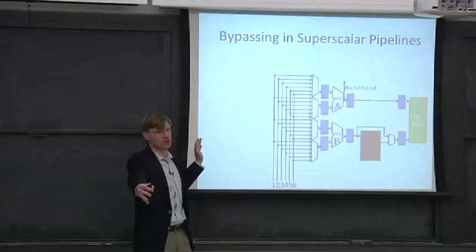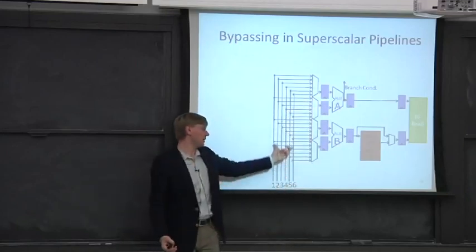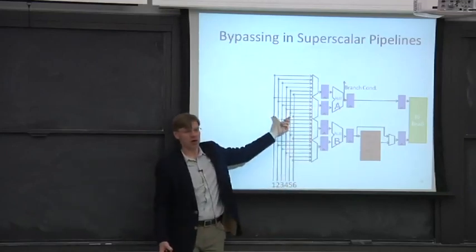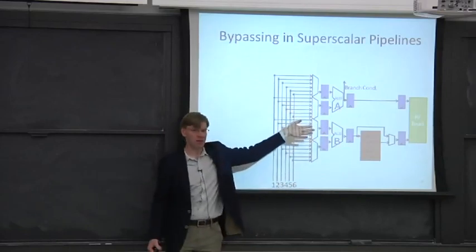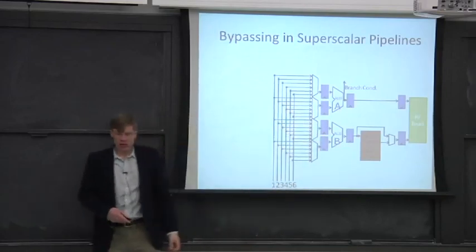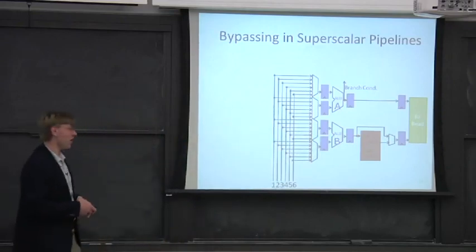So as you start to grow this to bigger and bigger pipelines, either in depth or in width, and you want full bypassing, you're going to have more and more much wider multiplexers here and a lot more data being bypassed. So this actually becomes a problem, and you need to start to think about this really hard.